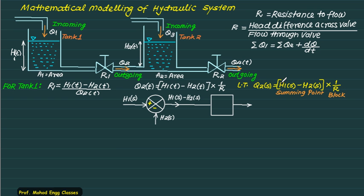We have H1S minus H2S at the summing point. The sign of H1S is plus and the sign of H2S is negative. So H1S and H2S are both inputs to the summing point, and the total output is H1S minus H2S. This is then multiplied by the block 1/R1, giving the final answer Q2S.